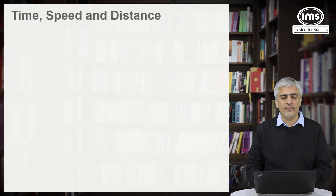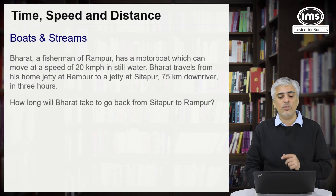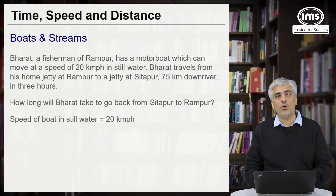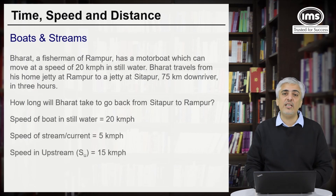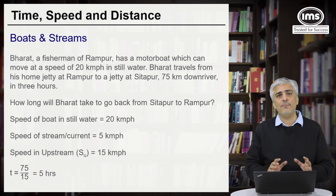Let's look at one more example. In the same question, it is asked how long will Bharat take to go back from Sitapur to Rampur? We already know the speed of the current is 5 and speed of the boat in still water is 20. Now going upstream, his speed will become 15 km per hour and the distance is 75 km. So time taken will be 75 divided by 15, which equals 5 hours.